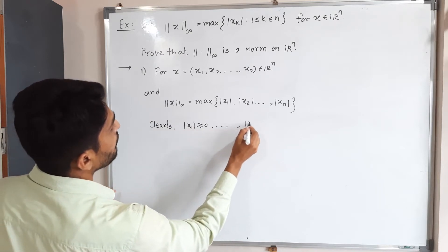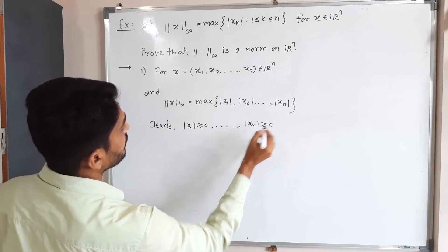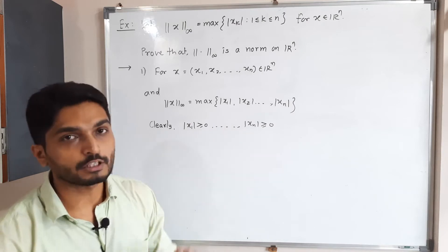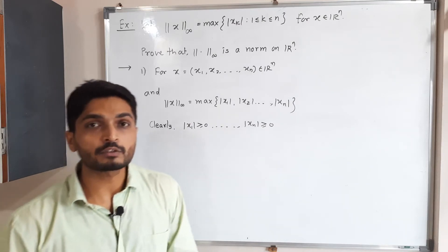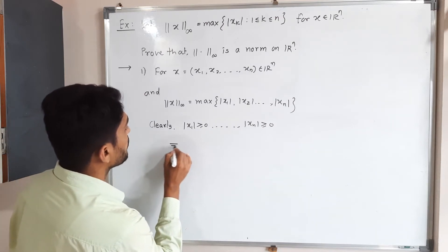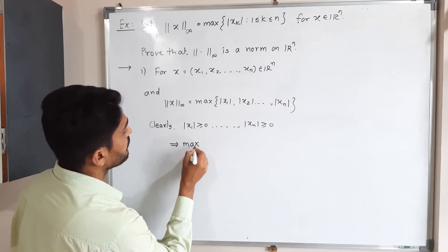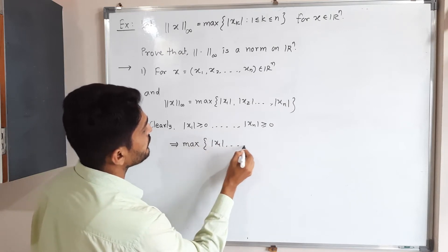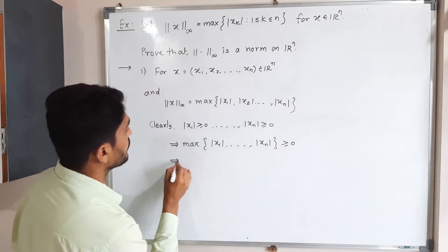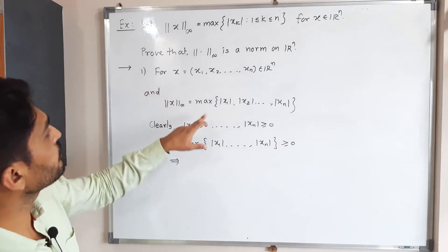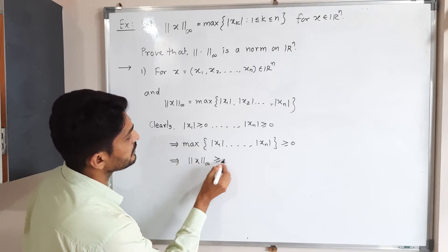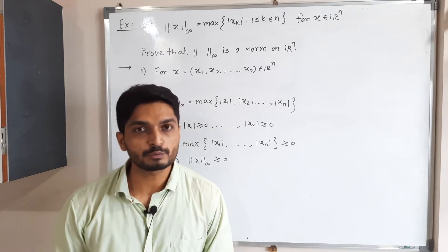Clearly, |x₁| ≥ 0, |x₂| ≥ 0, and so on — |xₙ| ≥ 0, since each has a modulus applied. If all of them are greater than or equal to 0, then taking the maximum of them also gives a value greater than or equal to 0. So ‖x‖∞ = max(|x₁|, ..., |xₙ|) ≥ 0. The first property is proved.